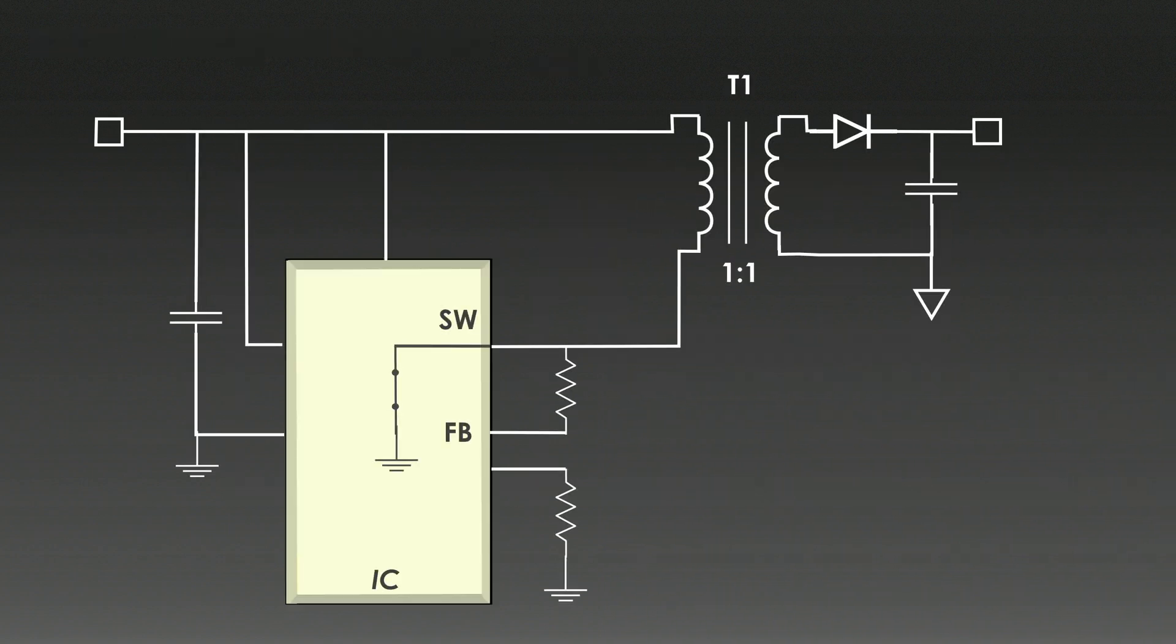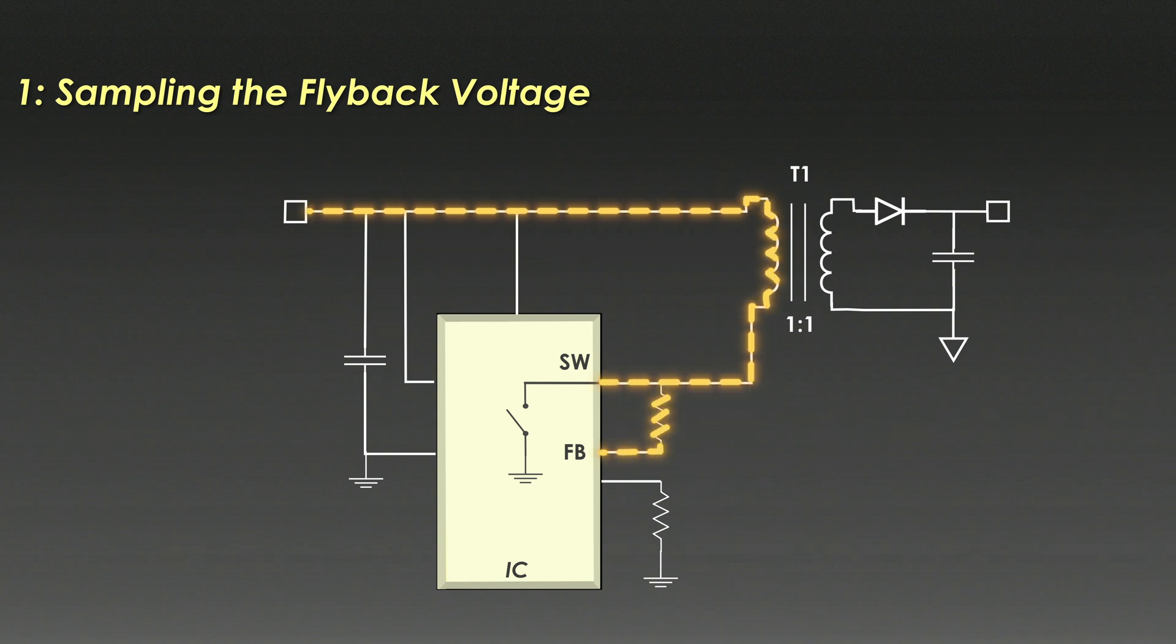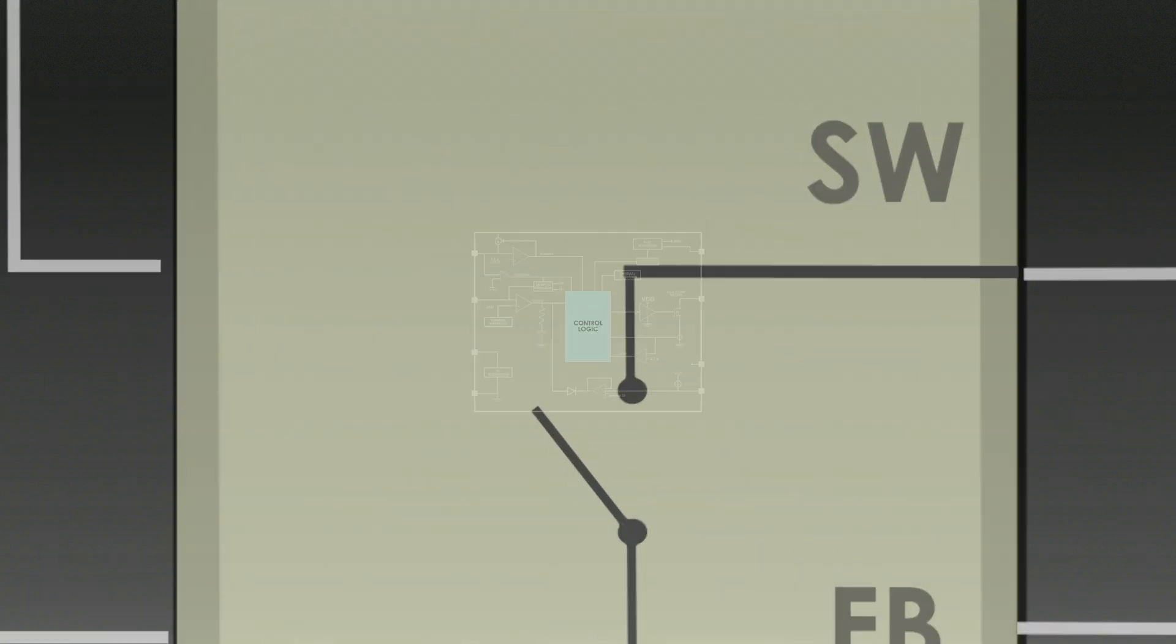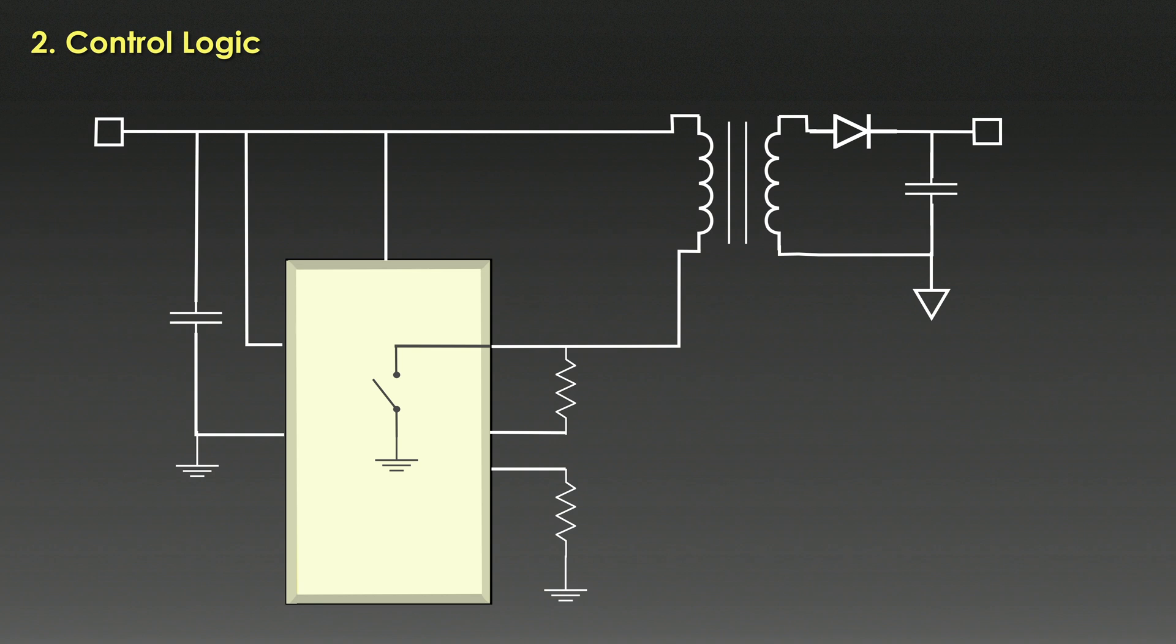The PSR flyback converter uses primary side feedback to regulate the output voltage. Here is how it works. When the MOSFET turns off, the voltage across the primary winding of the transformer, also known as flyback voltage, is directly proportional to the output voltage on the secondary side. The controller IC samples this flyback voltage during the off phase, which regulates the output voltage. If the sample flyback voltage indicates that the output voltage is too low, the controller increases the on-time of the MOSFET during the next cycle, increasing energy transfer.